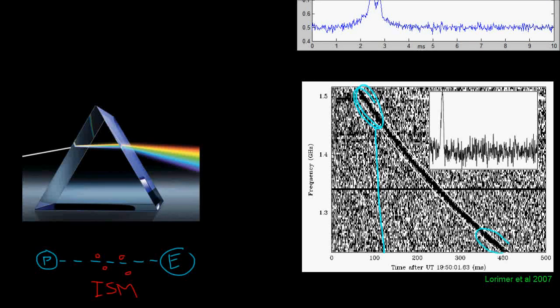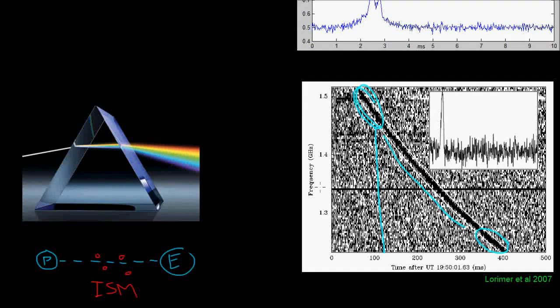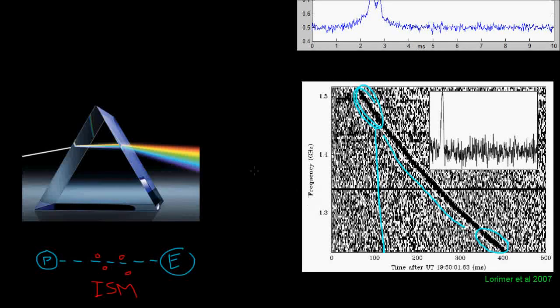And the exact shape of this curved line tells us about how much interstellar dust and gas is between us and the pulsar. And we refer to this as the dispersion measure, or DM.